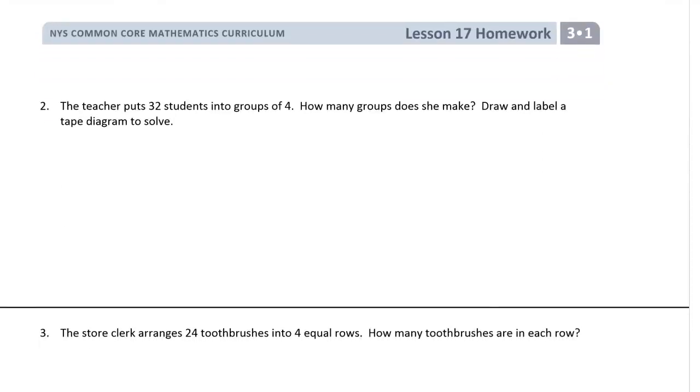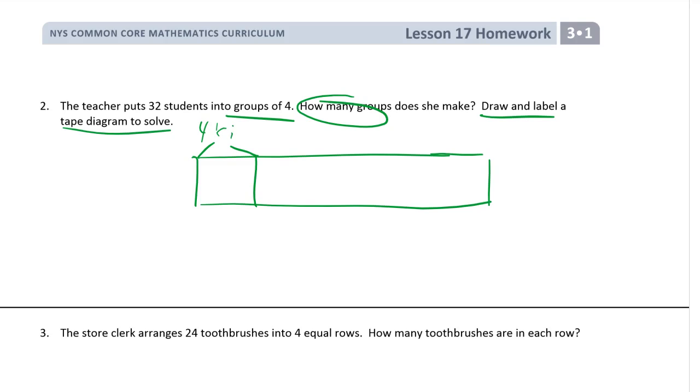Page two. The teacher puts thirty-two students into groups of four. How many groups does she make? Draw and label a tape diagram to solve. So we have groups of four, but we don't know how many groups. So I'm going to draw the tape. And we know there's going to be four kids, or four students if you want to write students. And we do know there are thirty-two kids. But we don't know. We have to find out how many groups.